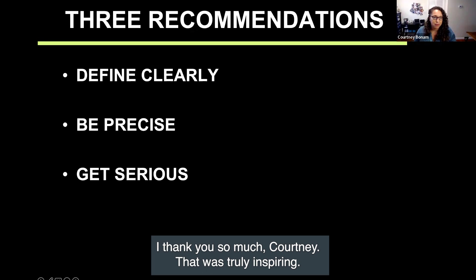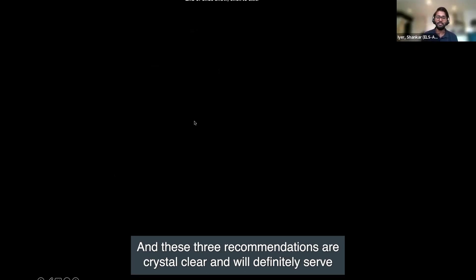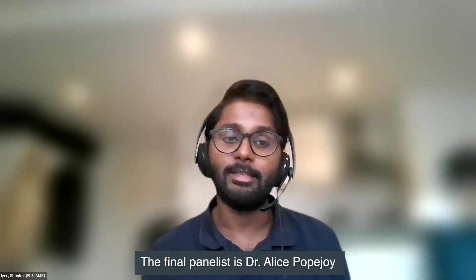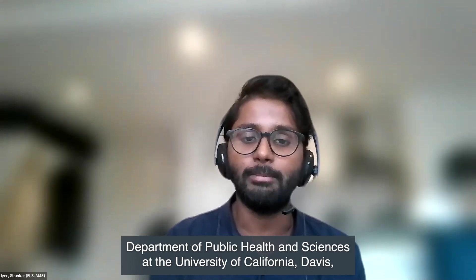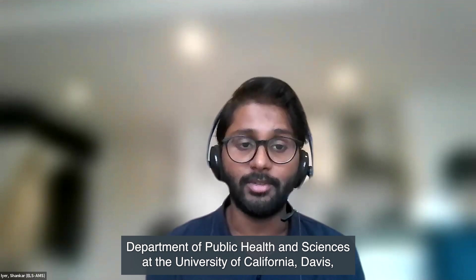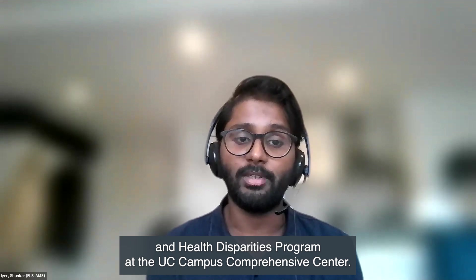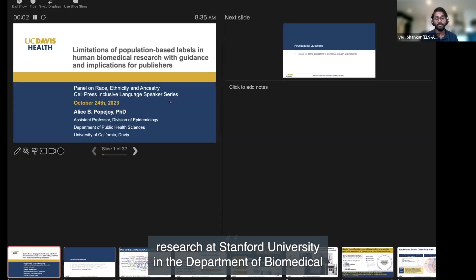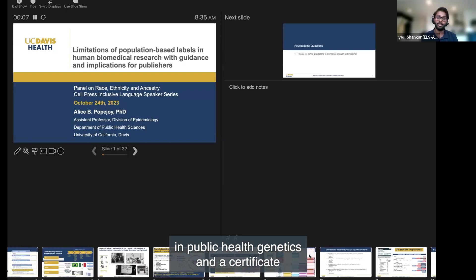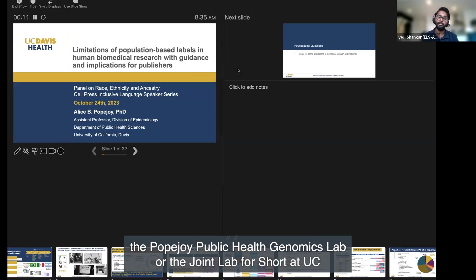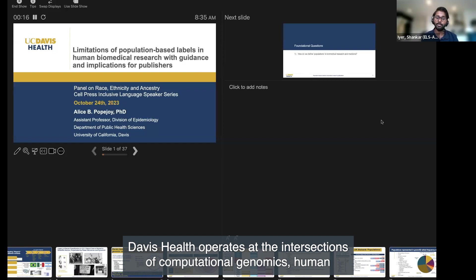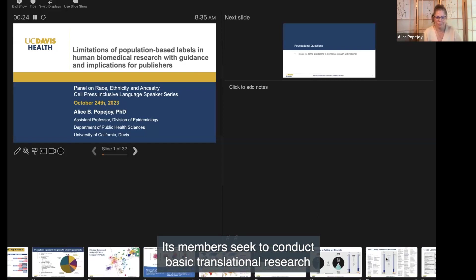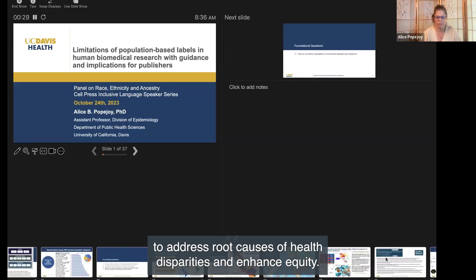Thank you so much, Courtney—that was truly inspiring. Those three recommendations are crystal clear and will serve as a primer for many people to think more seriously about this. We'll now move on to our final speaker, Dr. Alice Popejoy. Dr. Popejoy is an assistant professor in the Division of Epidemiology, Department of Public Health and Sciences at the University of California, Davis, and an associate member of the Population Sciences and Health Disparities Programme. She conducted postdoctoral research at Stanford University in the Department of Biomedical Data Science and the Stanford Center for Biomedical Ethics, after receiving a PhD in Public Health Genetics and a certificate in Statistical Genetics from the University of Washington. The Popejoy Public Health Genomics Lab, or JOY Lab, at UC Davis Health operates at the intersections of computational genomics, human population genetics, clinical genetics, biomedical data science, and bioethics.